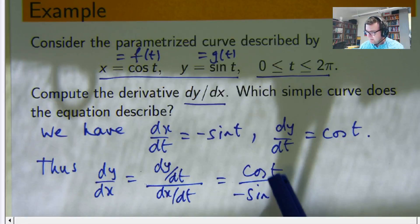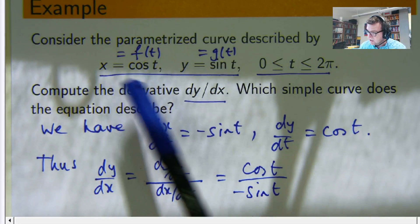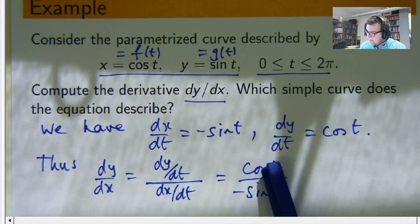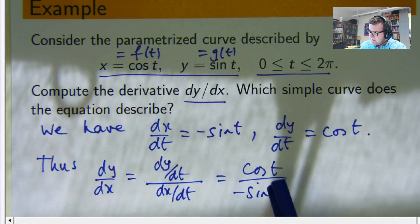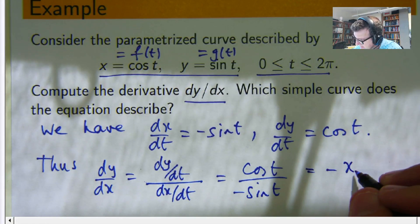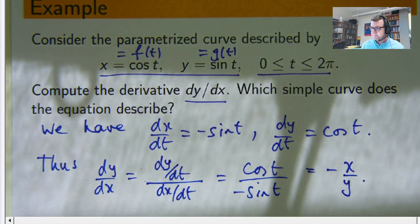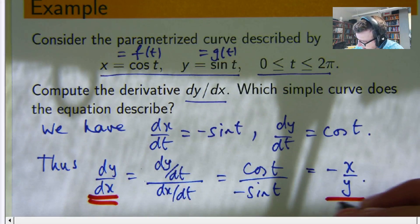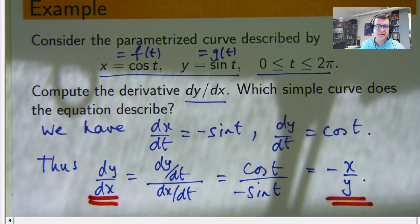Now here I've got it in terms of t. You can, if you look back, we can actually get it in terms of x and y because we can replace cosine t with x and sine t with y, which is nice in this case. So that's negative x over y.